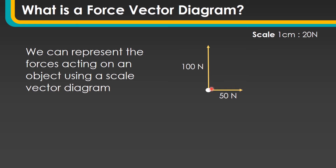We can draw those arrows to scale. In the top right-hand corner you can see I've got a scale of 1 centimetre equal to 20 newtons. I could work out how long each of these arrows needs to be to represent those forces accurately.